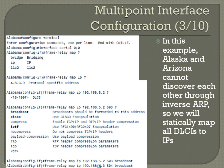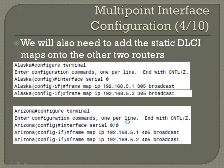We'll also need to add the static DLCI maps on the other two routers. These are a little bit different because since they only have one connection — one PVC — but they've got two other routers on the network that they can potentially access, you need to map both of those routers to that one DLCI that they have available.